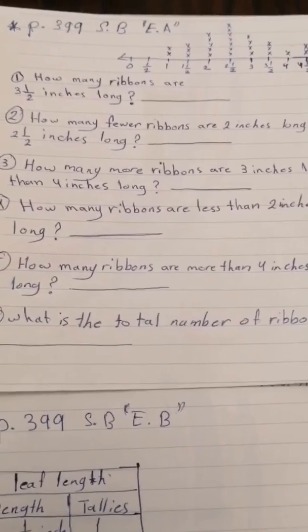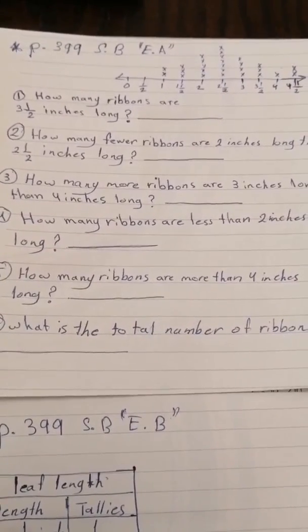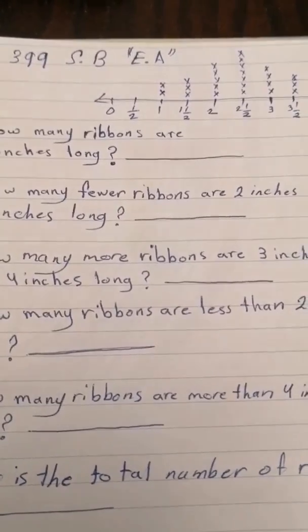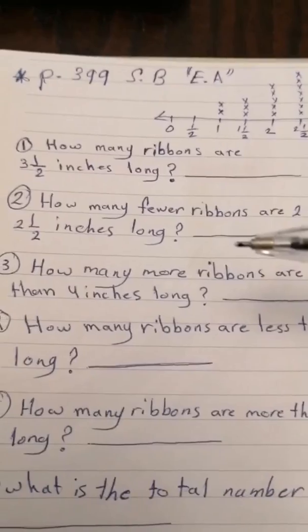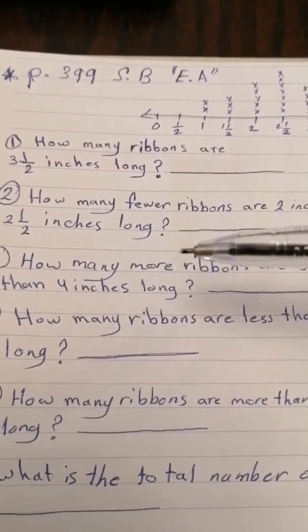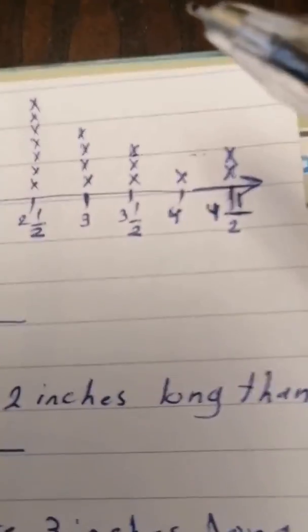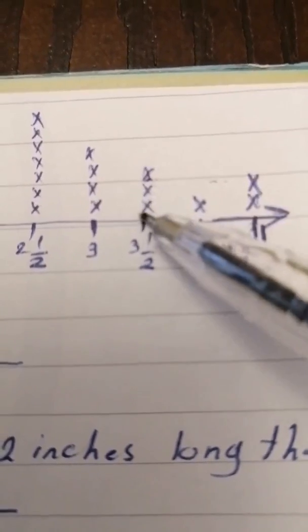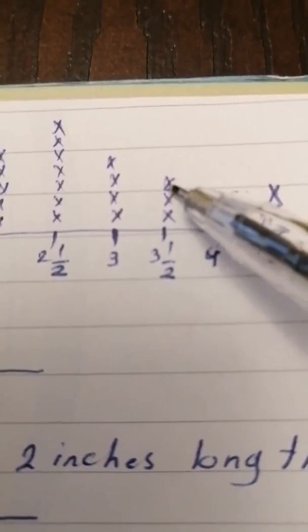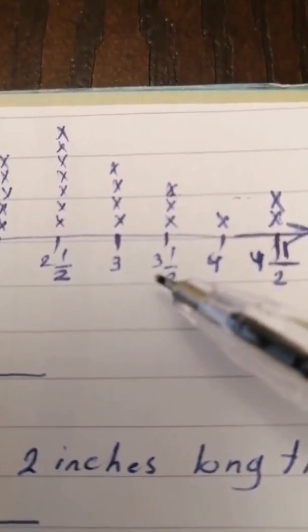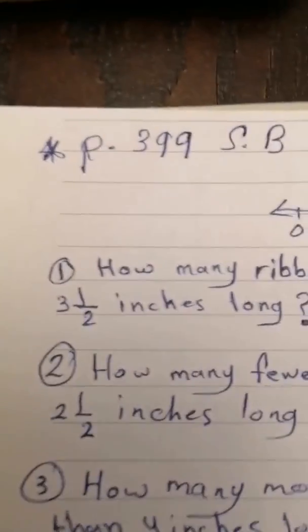Now go with me to page 399, Exercise A. We have to use the line plot to answer the questions. Question one: how many weapons are three inches and a half long? Go to three and a half inches on the line plot — count the X's: one, two, three. So the answer is three weapons.